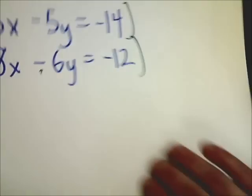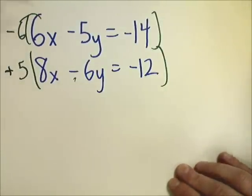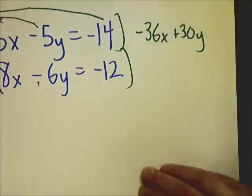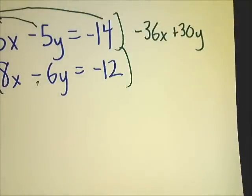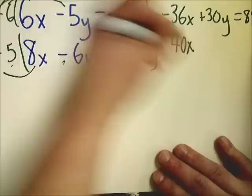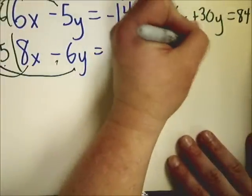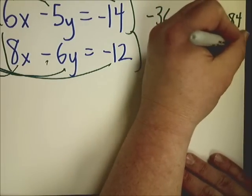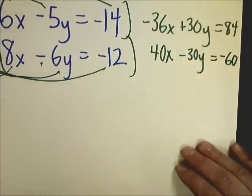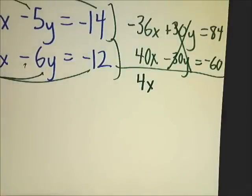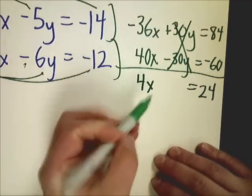So negative 6 times 6 is negative 36. Negative 6 times negative 5 is plus 30y. Negative 6 times negative 14 is positive 84. Now, on the bottom, 5 times 8 is 40x. 5 times negative 6 is negative 30y. And then 5 times negative 12, which is negative 60. And now the idea is I found out a way to eliminate these because now they're different signs. So I'm just adding them. Those cancel. 40 minus 36 is 4. 84 minus 60 is 24. So I just divide by 4, and x gives me a value of 6.